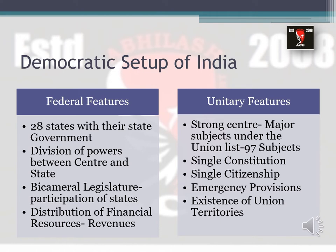The houses represent both people elected for the center as well as people elected from the various states, which shows that at the central level the participation of states is equally encouraged through the bicameral legislature. The next federal feature is distribution of financial resources — the money or revenue required by state governments is distributed to them in the form of taxes, some from the center and some collected directly from their own state.